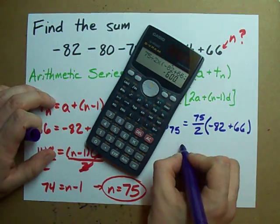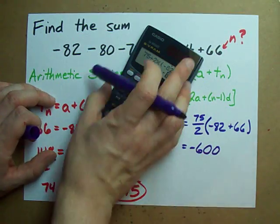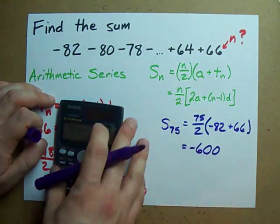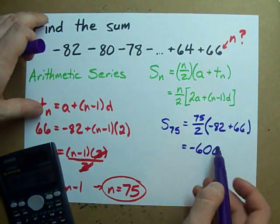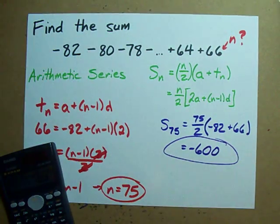Negative 600. The sum of the terms in this huge sum, this sum of 75 different terms, turns out to be negative 600.